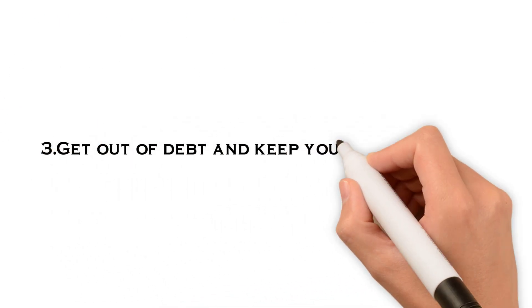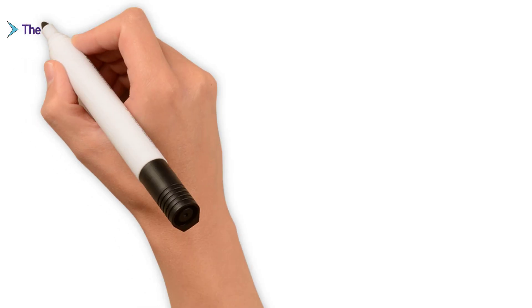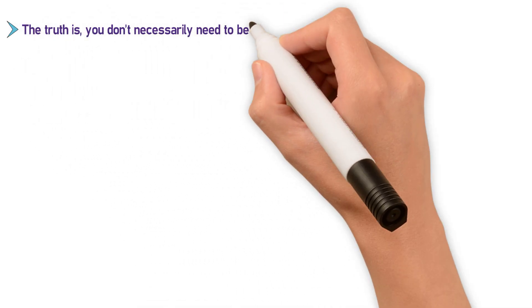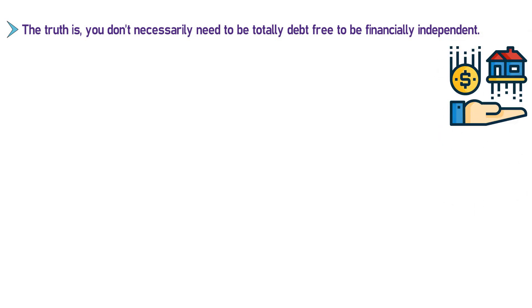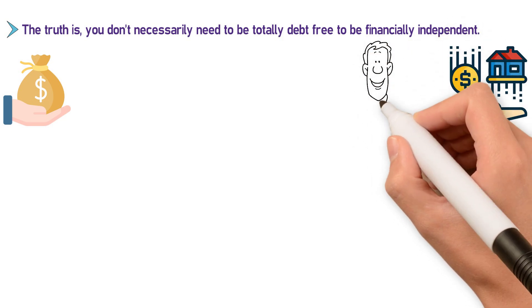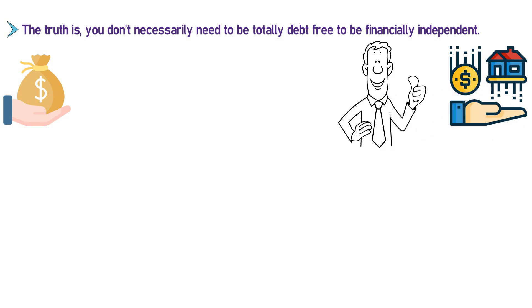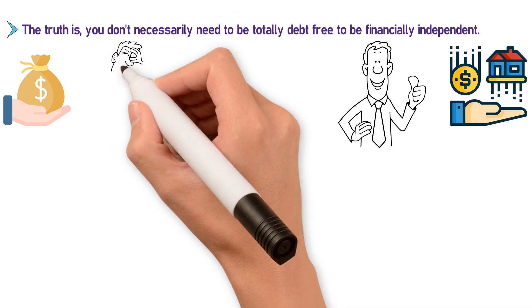Three, get out of debt and keep your expenses low. The truth is, you don't necessarily need to be totally debt-free to be financially independent. Some may still carry a mortgage into early retirement as their passive income may cover that expense, and it's been factored into the annual expenses. The truth is, having no debt makes this much easier.